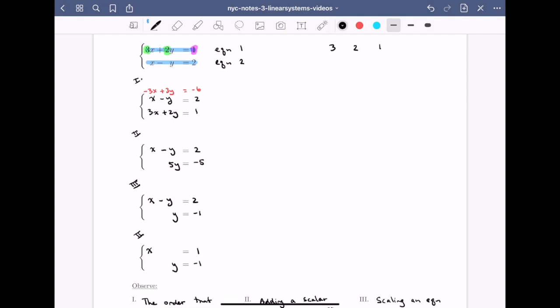I have to remember in my head that the 3 is the coefficient to x, the 2 is the coefficient to y, and the 1 is the constant on the right-hand side of the equation. I'm going to do the same thing for the second equation. The first coefficient is 1, the second coefficient is minus 1, and the constant is 2.